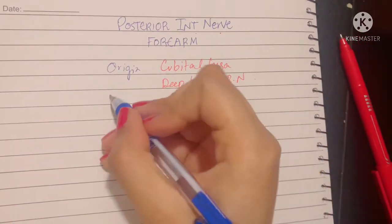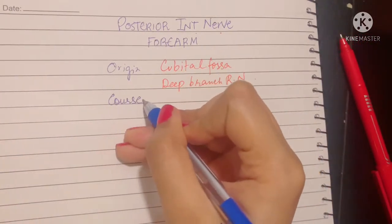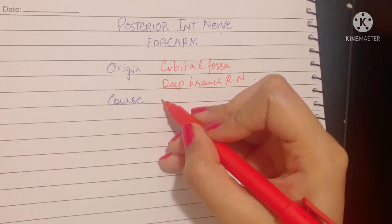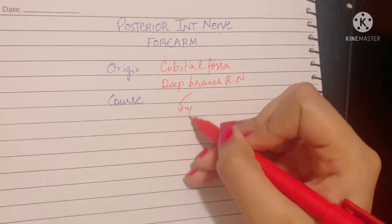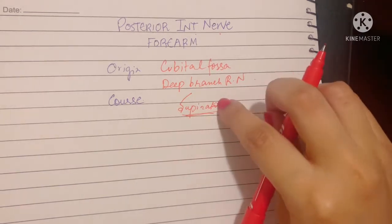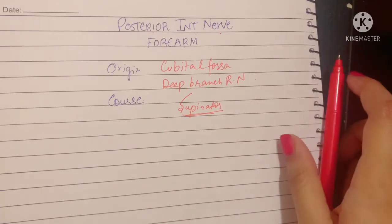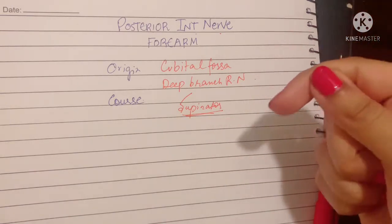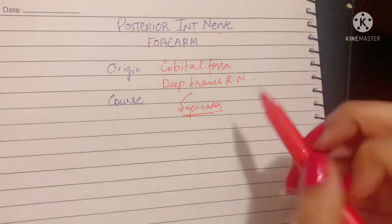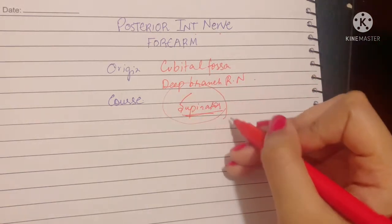The course of this nerve is quite simple. The nerve arises in the cubital fossa and then through the supinator muscle, it penetrates and passes from the anterior part to the posterior part of your forearm to enter the back of the forearm through the supinator muscle. That is very important.